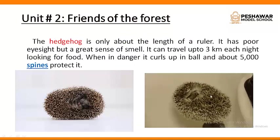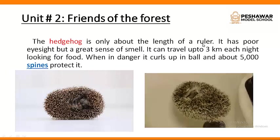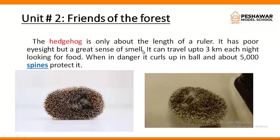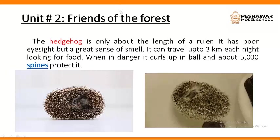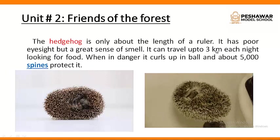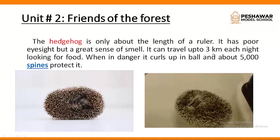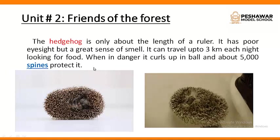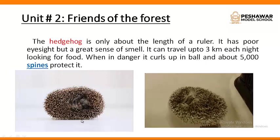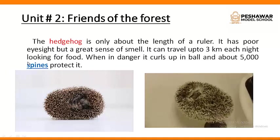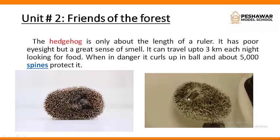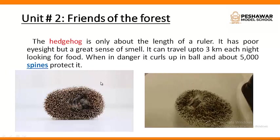The next animal is the hedgehog. The hedgehog is only about the length of a ruler — it is a very small animal. It has poor eyesight but a great sense of smell — they can smell danger. An important characteristic is that they can travel up to three kilometers each night looking for food. When in danger, the hedgehog curls up into a ball. They have about 5,000 spines — needle-like structures — on their body which form a defensive mechanism to protect themselves.